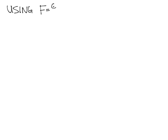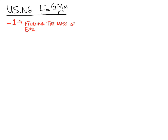Now that we have G, we can use this equation. Just like Cavendish, the first thing we're going to do is find the mass of the Earth. Imagine we have a 1-kilogram object — its weight on Earth is 9.8 newtons. Weight is just mass times the acceleration due to gravity. We knew these numbers since before Galileo. So a 1-kilogram object has a weight of 9.8 newtons.